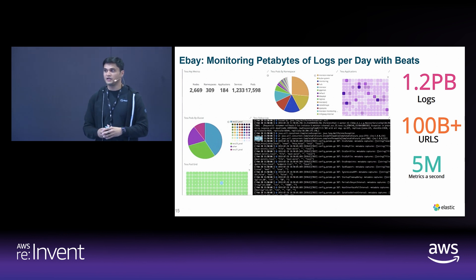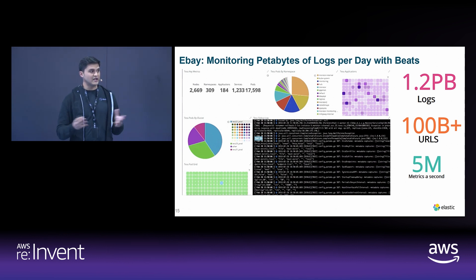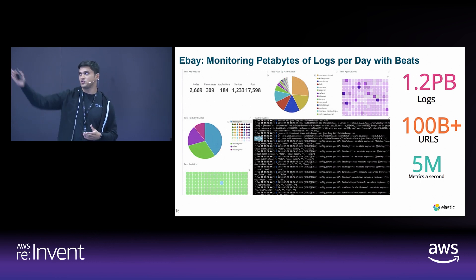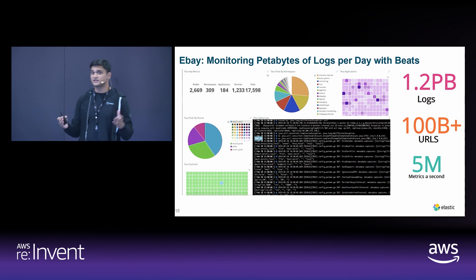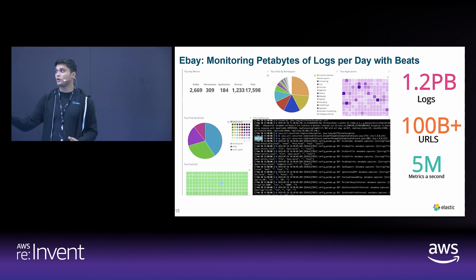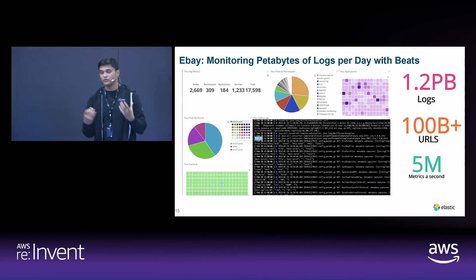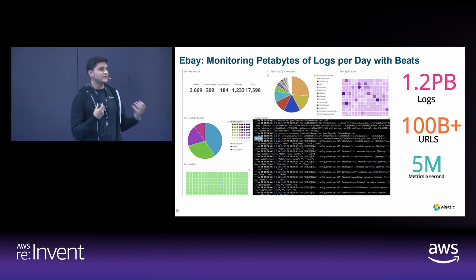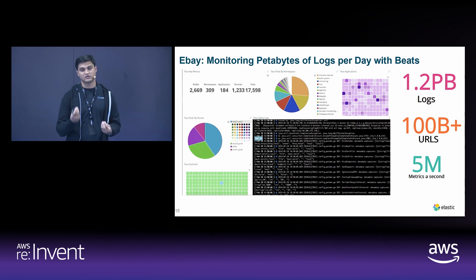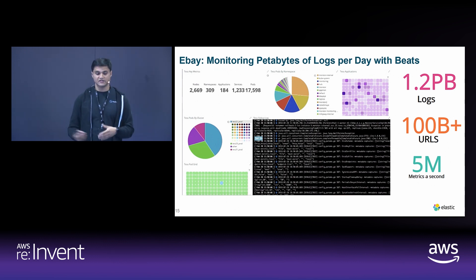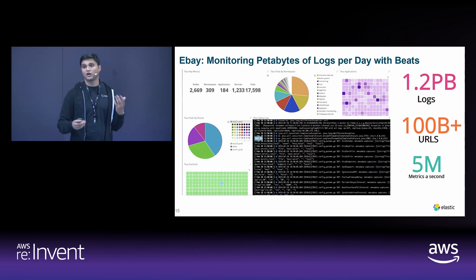A really nice example is eBay. They presented at our Elasticon conference using Elasticsearch and Kubernetes at massive scale. This screenshot from one of their dashboards shows 17,000 pods and 2,600 nodes. You can watch it on our Elasticon website — they're looking at petabytes of log data per day, using Beats deployed in Kubernetes, correlating logs and metrics. It's a really common use case: two disparate data sources, two different tools, centralized with Elastic for a lot of value.